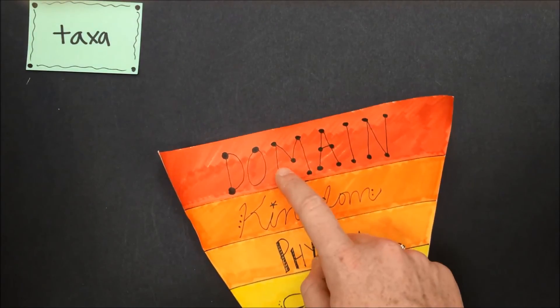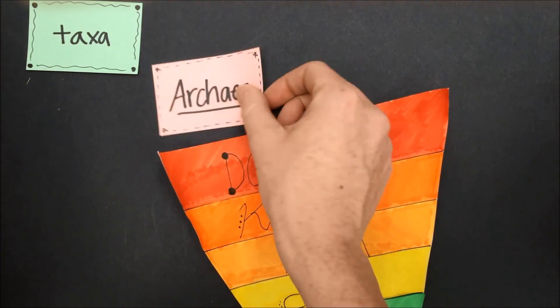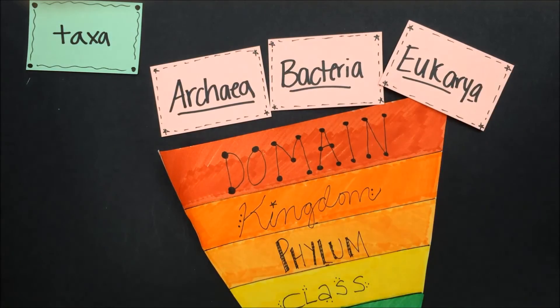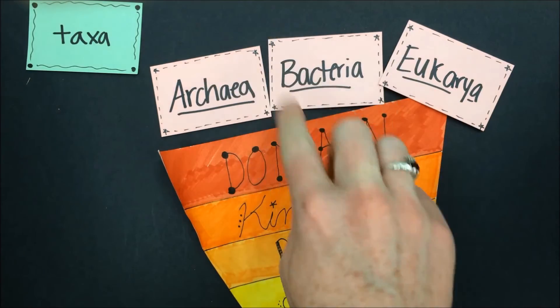Our three domains of life are archaea, bacteria, and eukarya. All living things fit into one of these three domains.